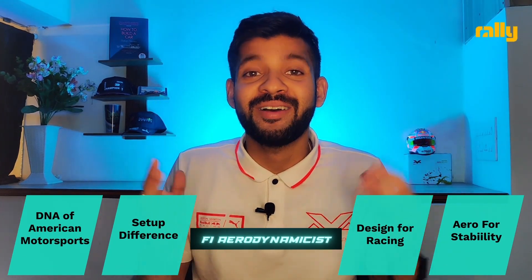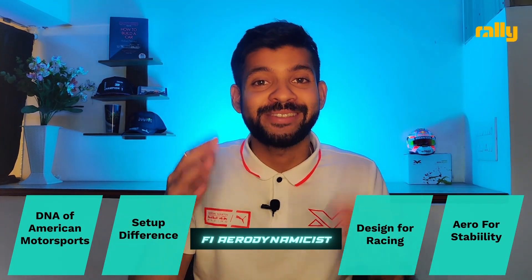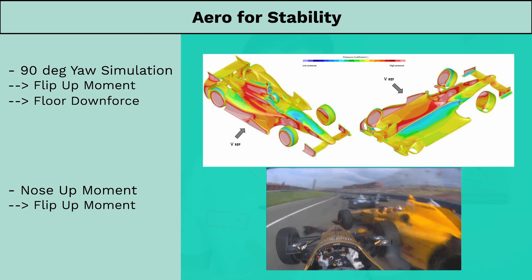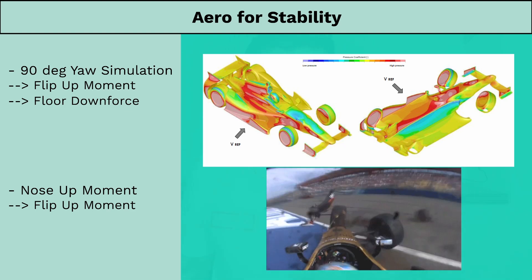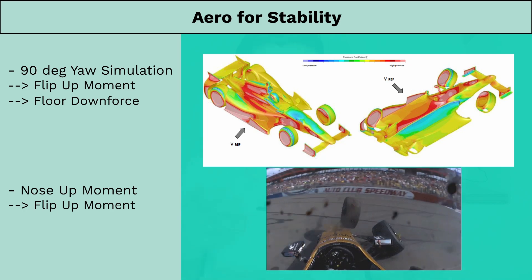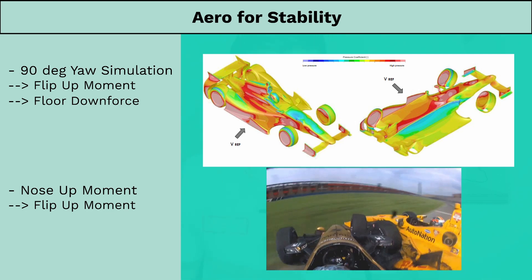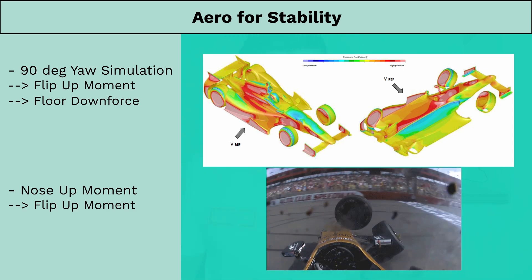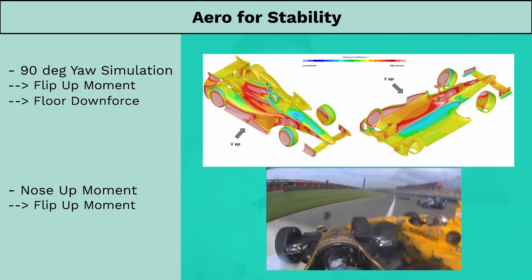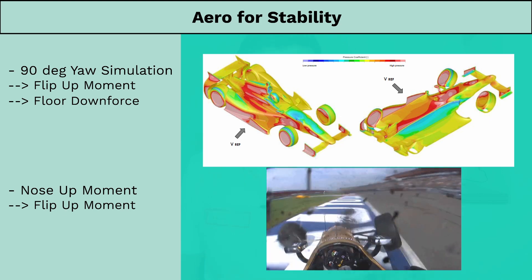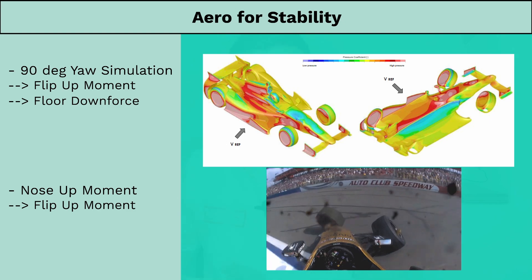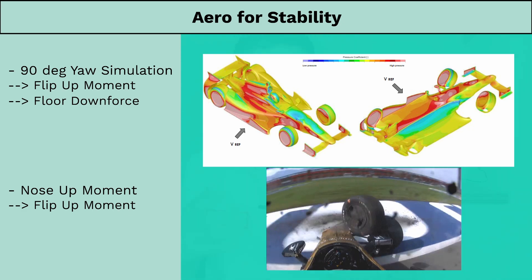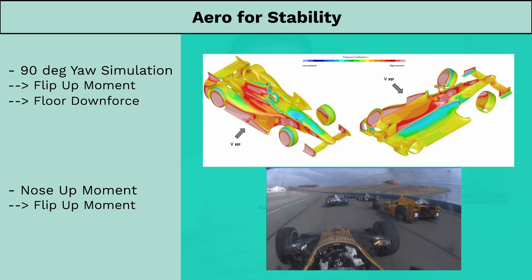Next, let's understand how IndyCar has leveraged aerodynamics to make racing at those speeds safer. Race cars had never been studied at a 90-degree yaw angle, and one of the big problems was that if a car was spun 90 degrees at 300 kilometers an hour, it would flip quite aggressively. By studying aerodynamics at 90-degree yaw, Dallara was able to minimize the flip-over movement. This was done by producing a high amount of downforce on the floor even at 90-degree yaw, and by creating a high-pressure zone on the lower half of the sidewall which counteracts the flip-over movement.